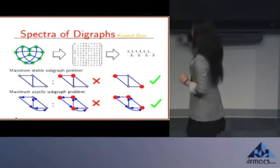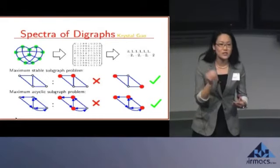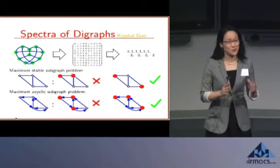My research lies in the directed case where instead of having paths between your cottages, you have one-way streets. And here we have to credit our researchers with the gift of foresight.